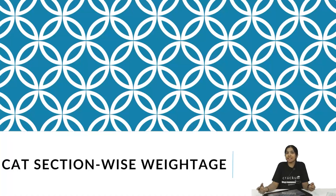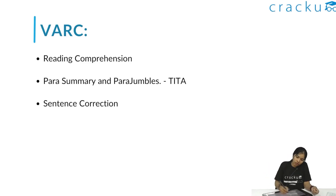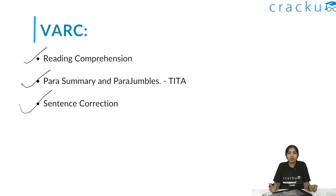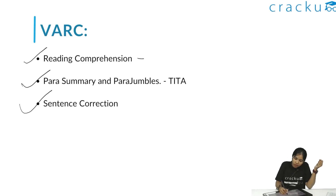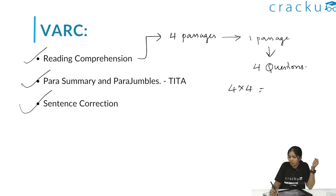Now let's deep dive into each section. First, let's look at VARC. The VARC section assesses your English language skills. It includes questions on Reading Comprehension, para-summary, para-jumbles, and sentence correction. You'll be given four passages, each with four questions — so 16 questions in total from RCs. In total, 24 questions are asked in the VARC section.